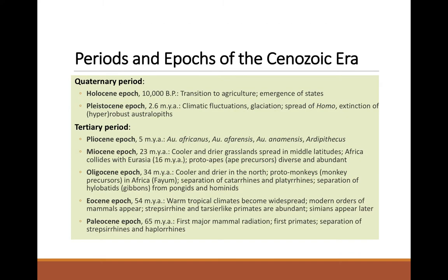As we divide the Cenozoic into periods, we've got the Quaternary and the Tertiary. The Tertiary is predominantly non-human primates, while the end of the Tertiary and into the Quaternary period is when we have hominins.